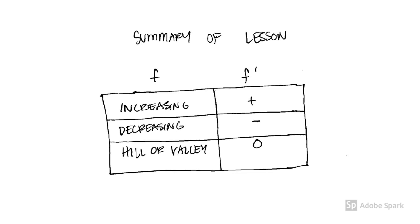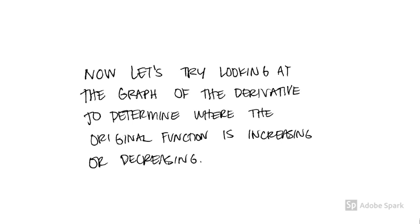The summary of the lesson is that when the function is increasing, its derivative is positive; when the function is decreasing, the derivative is negative; and when the function has a hill or a valley, the derivative is zero. What I mean by the derivative being positive, negative, or zero is that the derivative has positive, negative, or zero y-values.